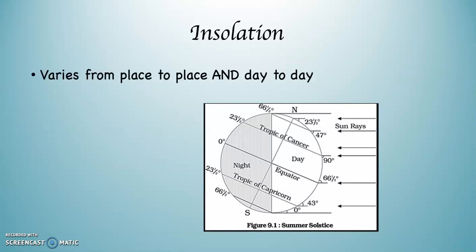The amount of insolation that any place receives varies from place to place and day to day. This is determined by latitude. If you look, this is the summer solstice for the northern hemisphere. Notice that at 23.5 degrees north, the Tropic of Cancer, the sun is at a 90 degree angle.